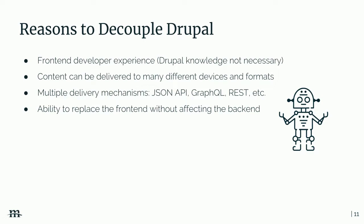Another benefit is the ability to rebrand — when someone comes along and says they're ready for a redesign. What's nice about decoupling is that you can replace the front end with a completely new system or a completely new rebrand and you've got that flexibility. With a decoupled architecture you can rebrand the front end and also do upgrades on the back end, even swapping the back end out to something else, with a lot less breakage in the process.